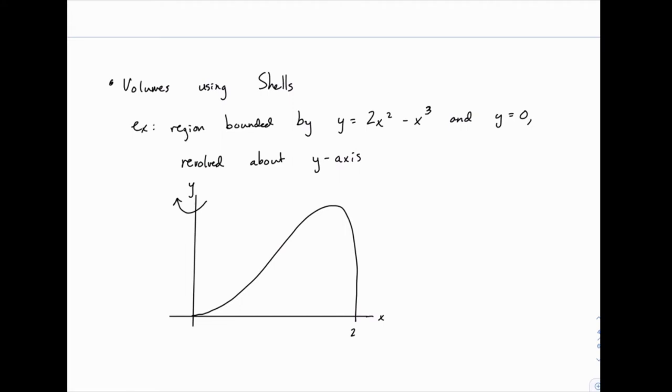Now if we revolve this around the x-axis, we would most likely use disks to do this. There would be no issues at all because as we slice across the x-axis we would end up with disks with a thickness of delta x, the radius would just be the difference between y equals zero and this function here, and then we could integrate after squaring it and expanding. So it would be pretty simple if we were revolving around the x-axis.